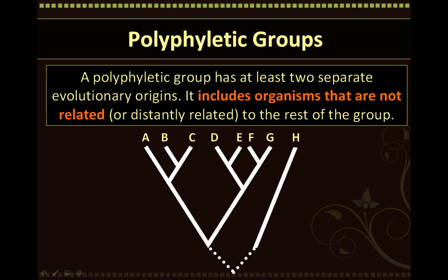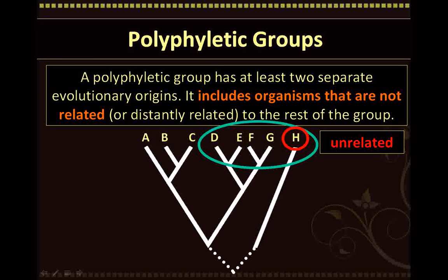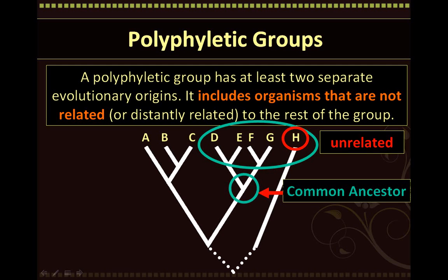In this polyphyletic tree, suppose we classify D, E, F, G, and H to be part of a group. Although we have correctly identified D, E, F, and G to be closely related, we have incorrectly included species H in the same group because it does not come from the same common ancestor. This would create a polyphyletic group because species H, although not a descendant of the common ancestor, was included in the group.